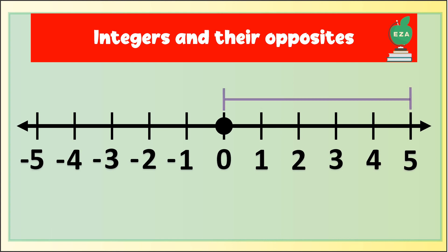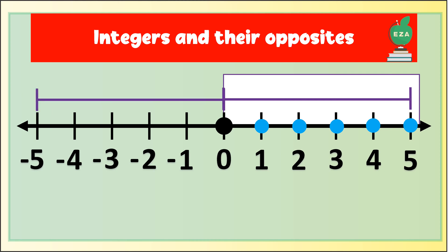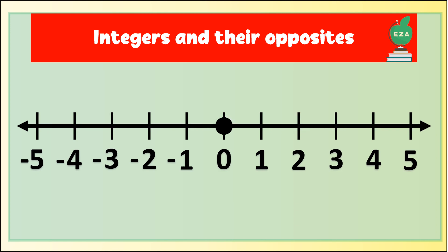Now let's count to positive five on the number line. What number is positive five's opposite? If you guessed negative five, you guessed correct. Remember, a number's opposite is the same distance from zero.